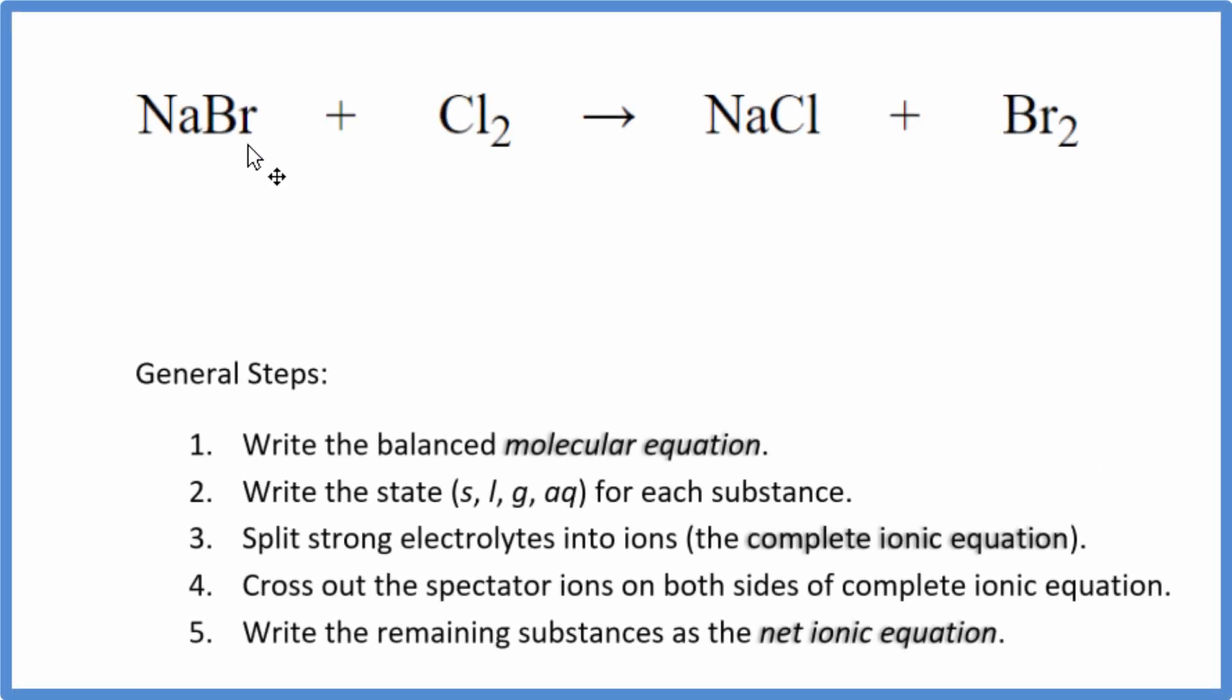In this video, we'll write the balanced net ionic equation for NaBr plus Cl2. This is sodium bromide plus chlorine gas. This is a single displacement reaction. The chlorine comes in, it pushes the bromine out, so the bromine is by itself. Now the chlorine and the sodium together form NaCl. Single displacement reaction.